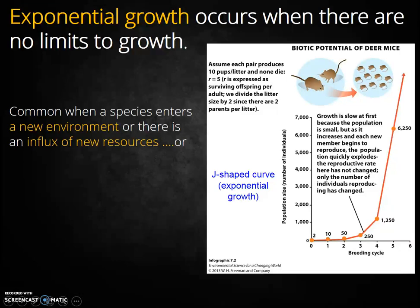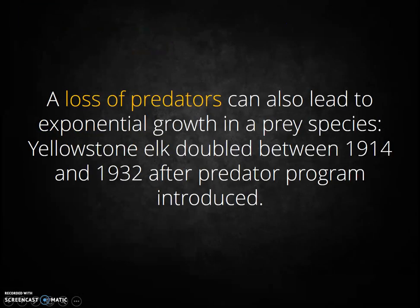Exponential growth is common in the following situations: when there is an influx of new resources, when an organism enters a new environment, or when a predator is removed. That last example helps us understand how important predators can be in a community. When wolves were removed from Yellowstone in the early 1900s, the elk population experienced a period of exponential growth. How do you think this explosion of elk affected the rest of the Yellowstone ecosystem?